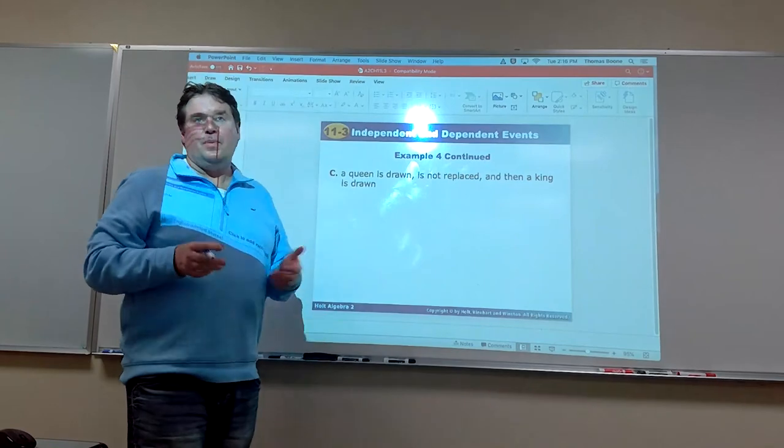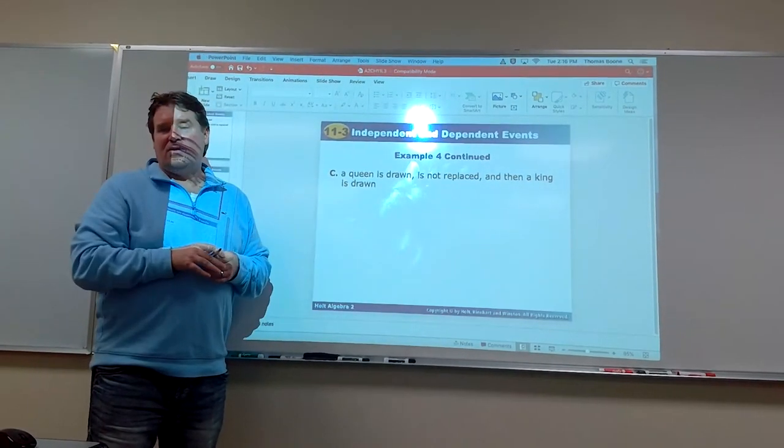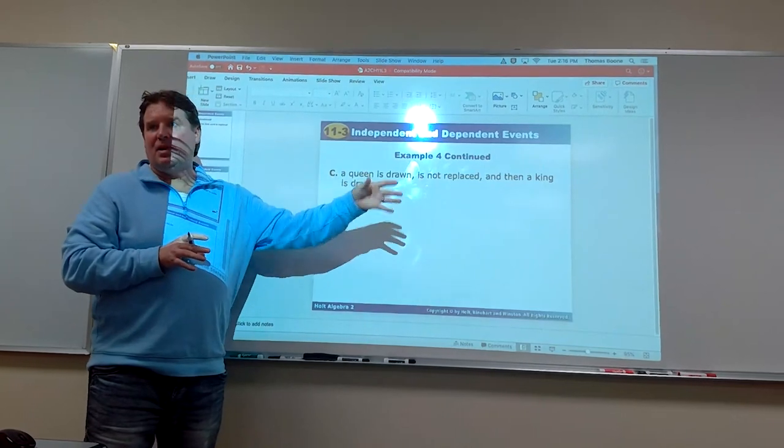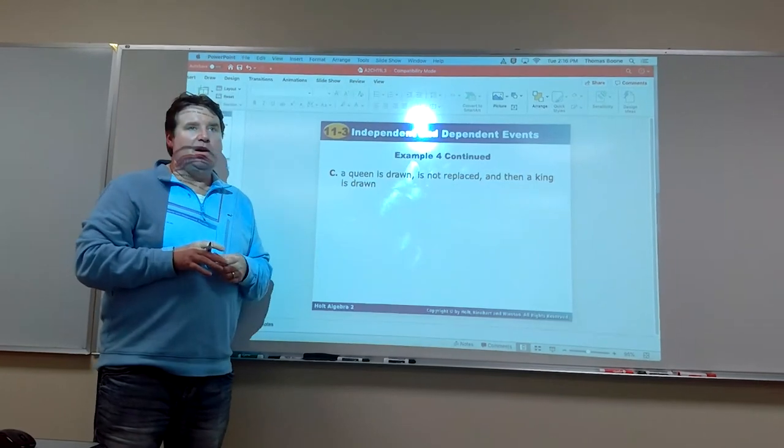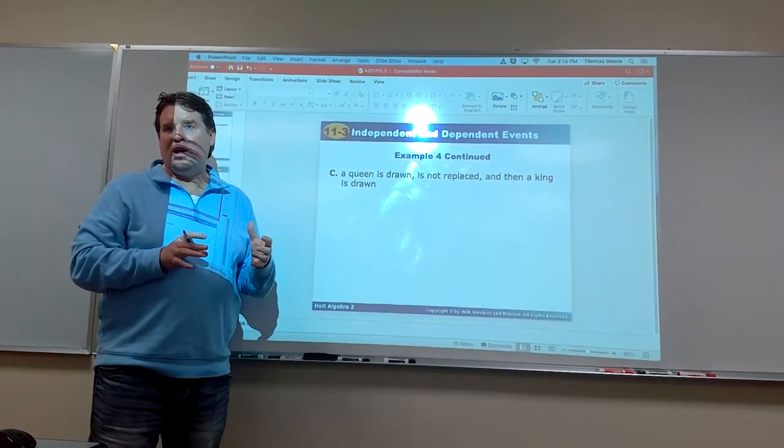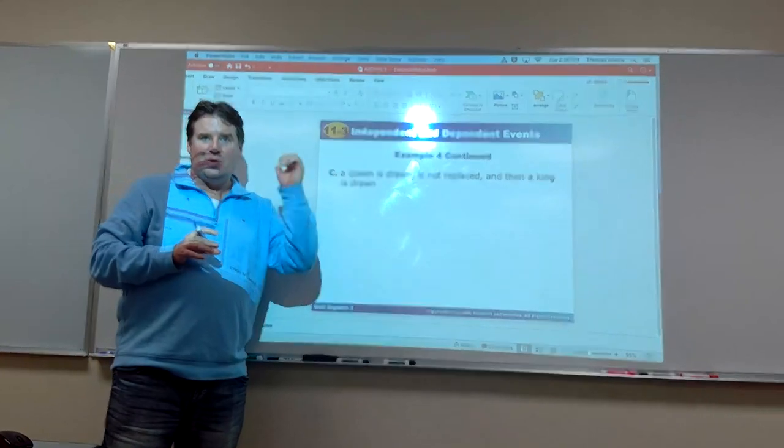Okay. So remember, independent is when the probability of one does not change. Probably the second one happening dependent. The first one happening does change that probability. Alright. So you're ready to go for 11-3 worksheets. Check them. Try them. Check them with the keys. Email me if you have some questions. Thank you. We'll see you next time.